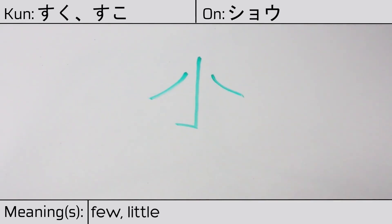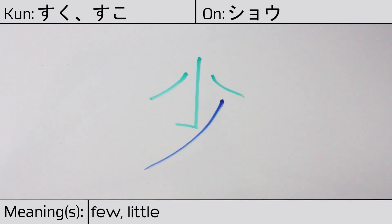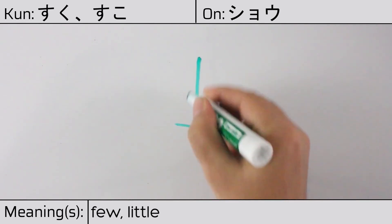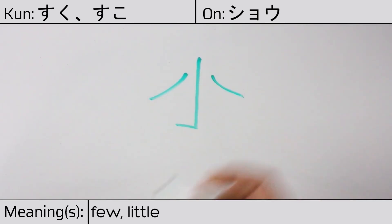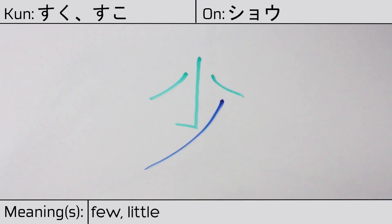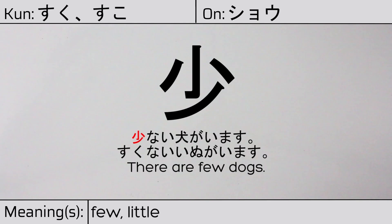This character is made up of the following radicals or parts: small or insignificant, followed by katakana no. You can remember this kanji by the following hint: small, modified by no, to indicate a shift to a related meaning — that is, few. Our example sentence is: sukunai inu ga imasu — There are a few dogs.